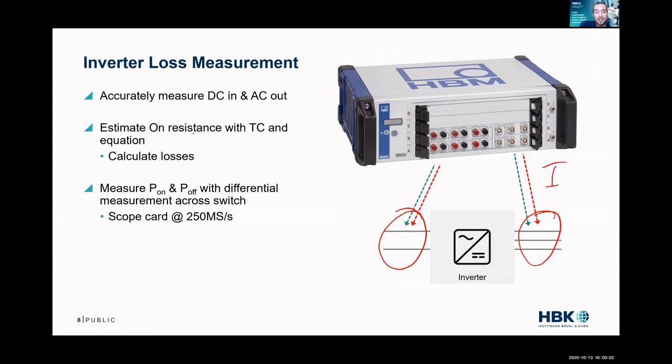We can estimate the on resistance with a thermocouple, or we can just estimate the on resistance based on beta sheets or knowledge of the switch. And we can calculate those conduction losses. So we got our I, we got our R, we know how many switches there are, we can start to calculate losses of the switch and get those conduction losses.